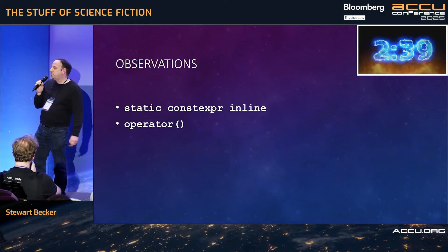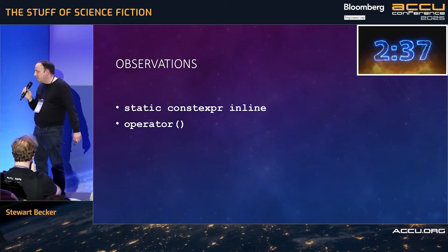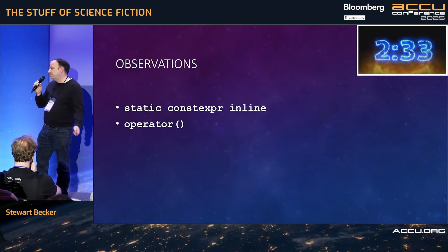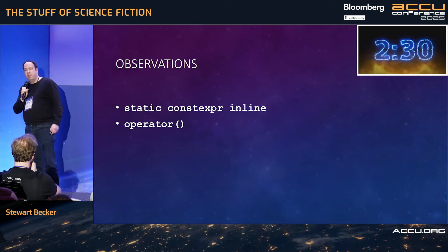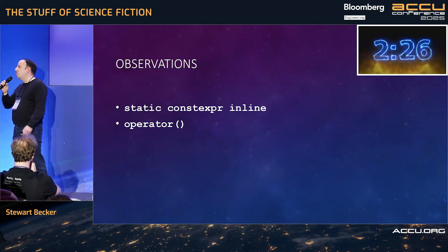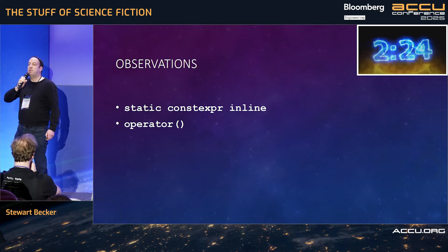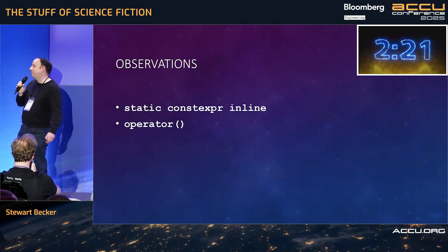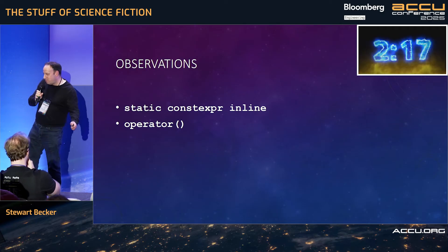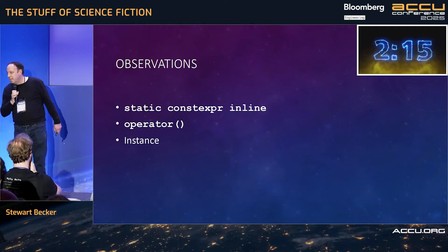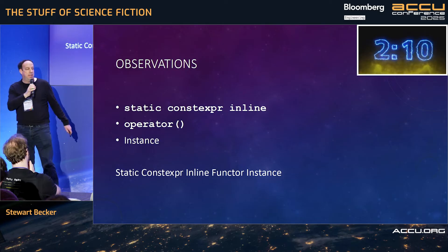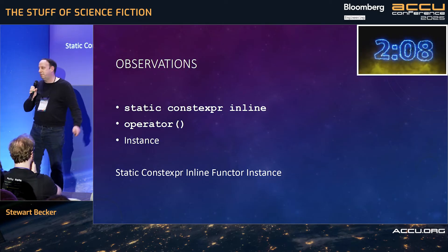Now, I know some people don't like the use of the word 'functor' like this, because they say that's not what a functor is — category theory says it's something else. But it's okay for the same word to be used in different meanings in different contexts. If you disagree with this, please stop using the word 'category' in a different way to the rest of the English-speaking world. When you've done that, we can resume the conversation about functor. And as an object, it's an instance. So this is the static constexpr inline functor instance. It just trips off the tongue, doesn't it?